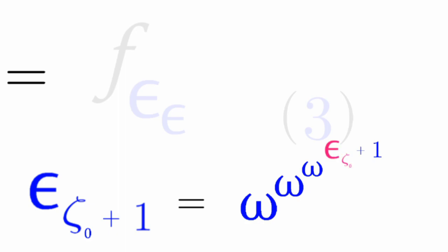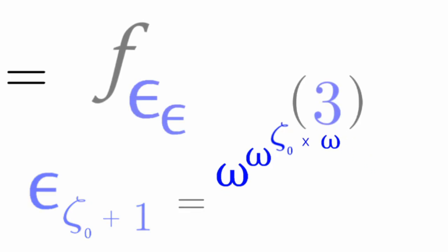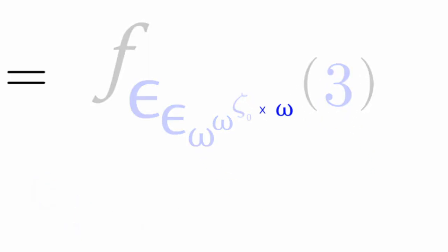Now epsilon_{ζ₀}, as we've known earlier, collapses into just zeta naught. Then we apply the rule of exponents similar to the previous video, and omega to the zeta naught collapses into just zeta naught. Now omega gets diagonalized into a 3. This becomes zeta naught times 3. Zeta naught times 3 breaks down into zeta naught times 2 plus zeta naught.